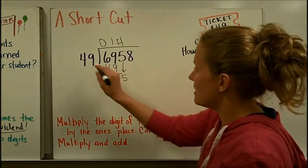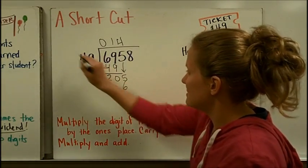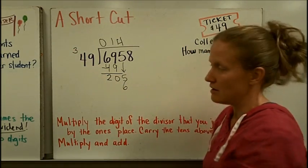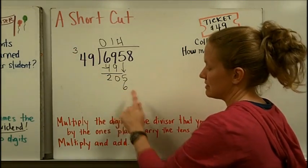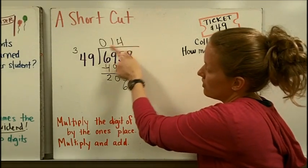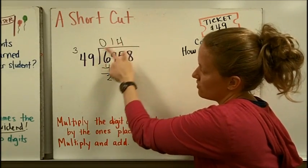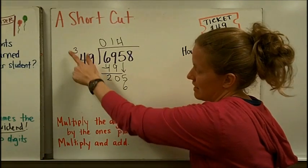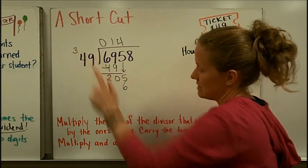Carry the tens above the divisor. So 4 times 9 is, put the 6 down, carry the 3. So 36. Now I'm going to multiply and add. So I'm going to do 4 times the tens place. 4 times 4 is 16. And add this. 17, 18, 19.